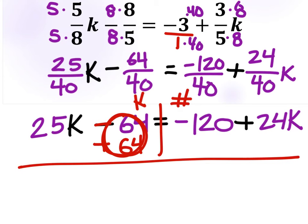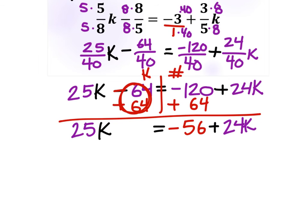Now, if I do it to one side, I've got to do it to the other side as well. So I'll add 64 to that negative 120. Notice I'm not adding the 64 to the 24K because they are unlike terms. And this is what I have now. 25K equals negative 56 plus 24K.